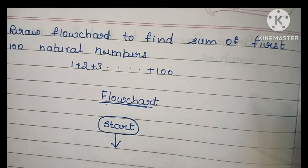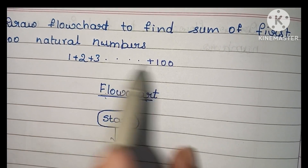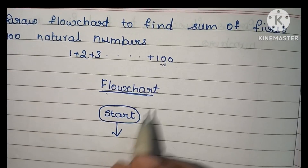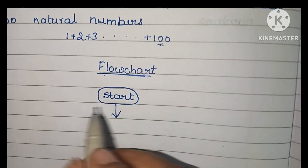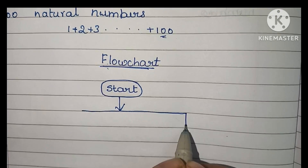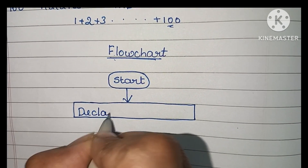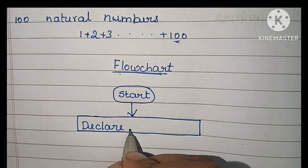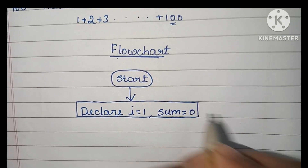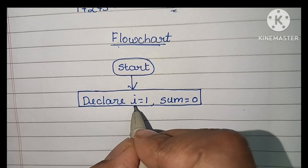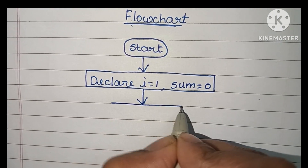There is no need to read input values here because we have to find the sum of the first 100 natural numbers — the initial value is 1 and we add up to 100. So we initialize our variables: declare i = 1 and sum = 0. Variable declaration is done within a rectangular shape.